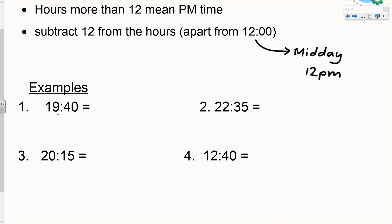Okay so let's look at the hours. The hours are 19. This means that we are past midday, this is past 12. This is a pm time. And we've got to subtract 12 from the hours. So this time we're going to take away 12 from 19 to give us 7:40 pm.